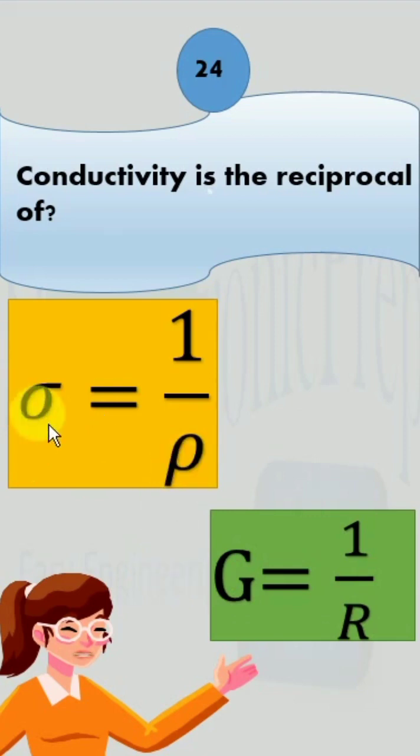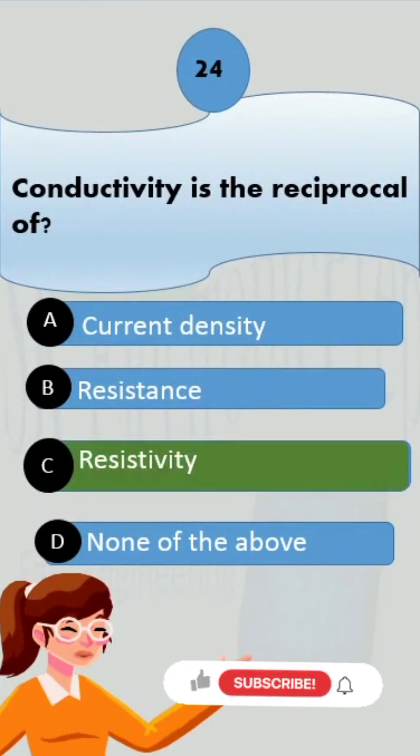Conductivity and resistivity are also opposite of one another. So the correct answer is C, which is resistivity.